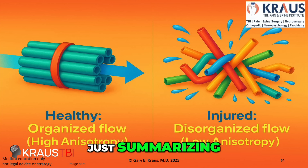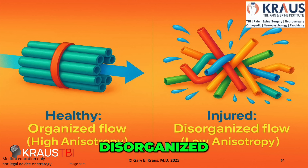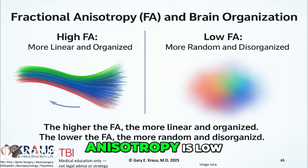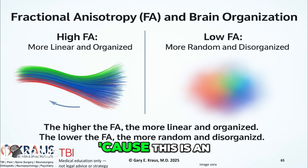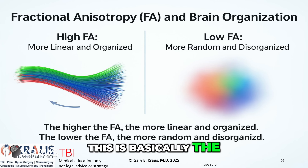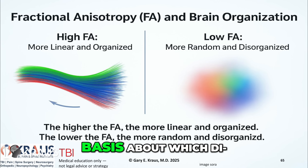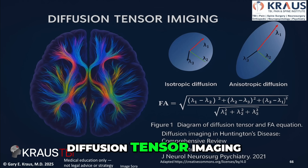To summarize: healthy, organized tubes — anisotropy is high. Injured, disorganized — anisotropy is low. This is the fundamental basis of diffusion tensor imaging.